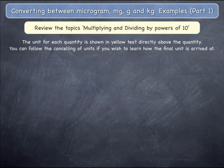In the following examples, the unit for each quantity is shown in yellow text directly above the quantity. This will show you how the units cancel.